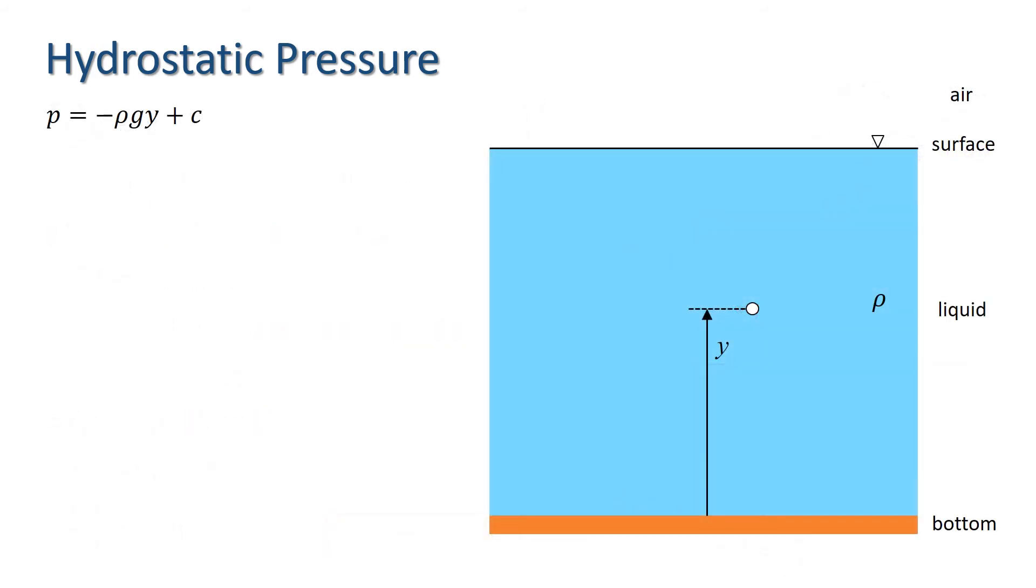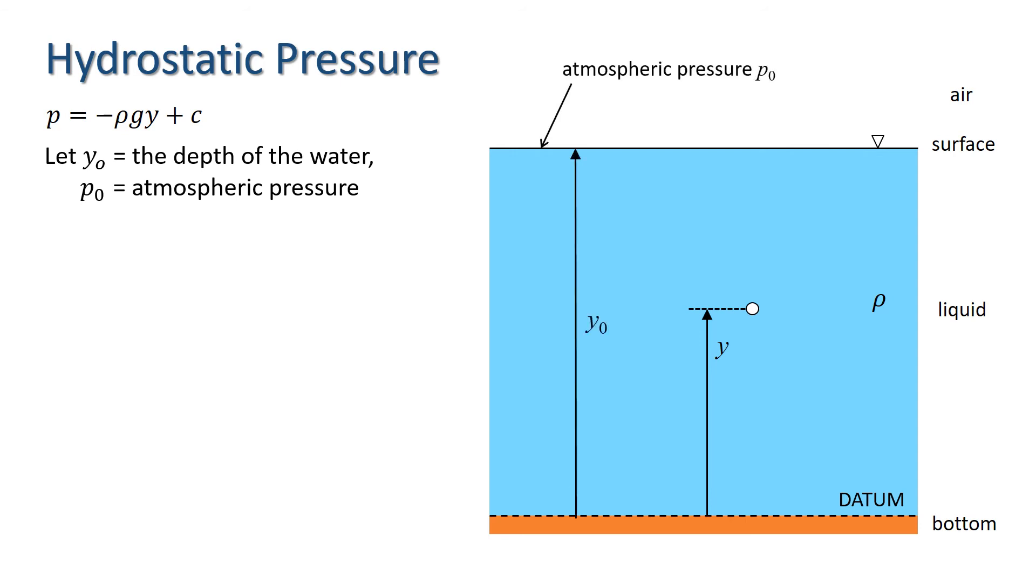We can formulate a boundary condition for this case. If we let the bottom of our domain be the datum for Y and let Y nought be the depth of the water and P nought the atmospheric pressure, then our boundary condition is P equals P nought when Y equals Y nought. What does that make C? Substituting these values into our equation for P gives P nought equals minus rho G y nought plus C, i.e. C equals P nought plus rho G y nought.